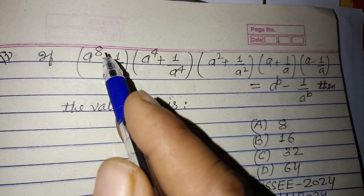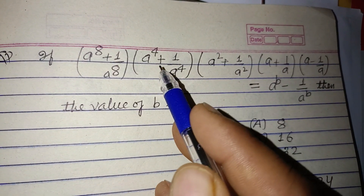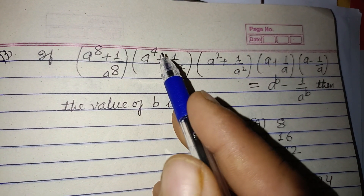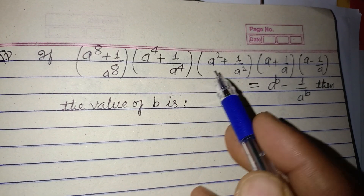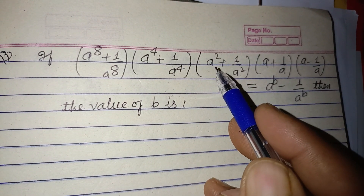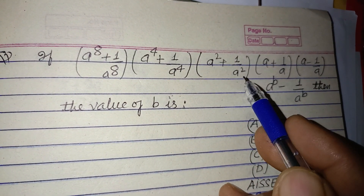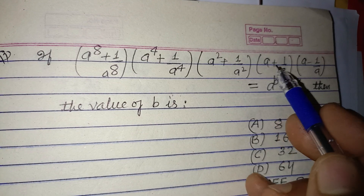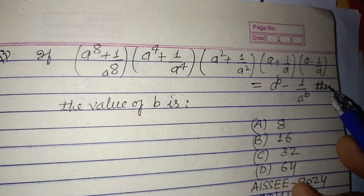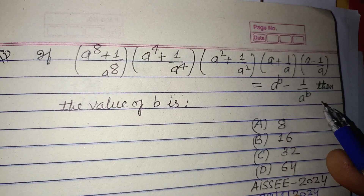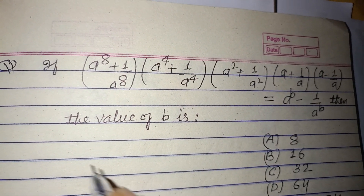The question: (a^8 + 1/a^8) × (a^4 + 1/a^4) × (a² + 1/a²) × (a + 1/a) × (a - 1/a) = a^b - 1/a^b. Find the value of b.